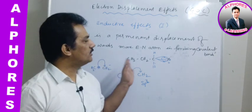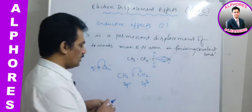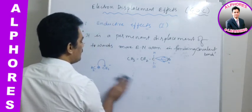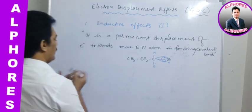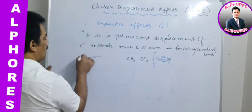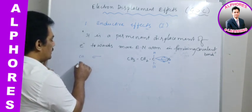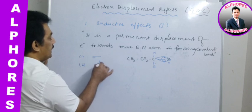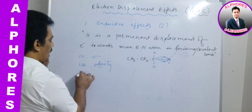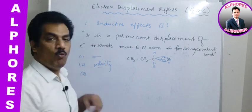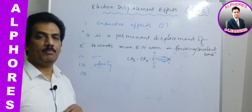When this displacement takes place, the key salient features are: the displacement is through sigma bond — only through sigma bond — and because of this, polarity is generated. Our question is: what is the purpose of this type of displacement?